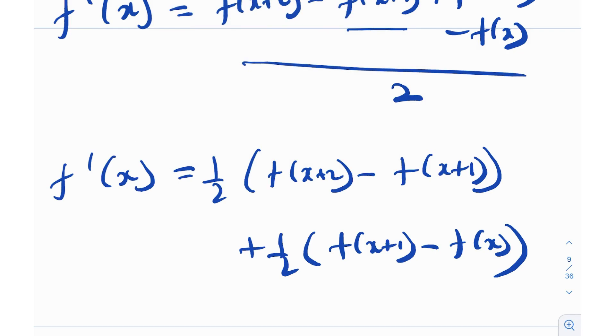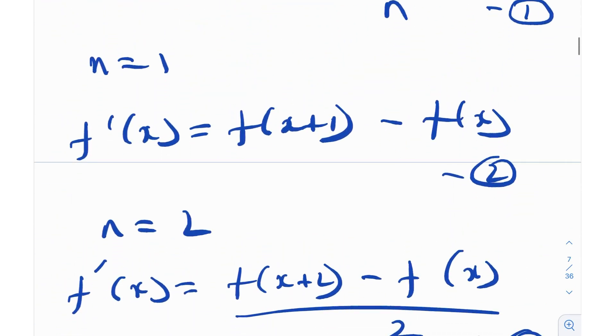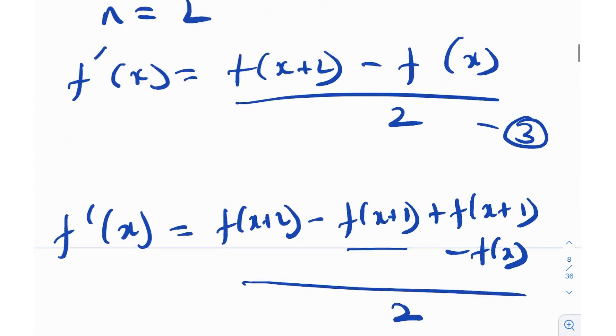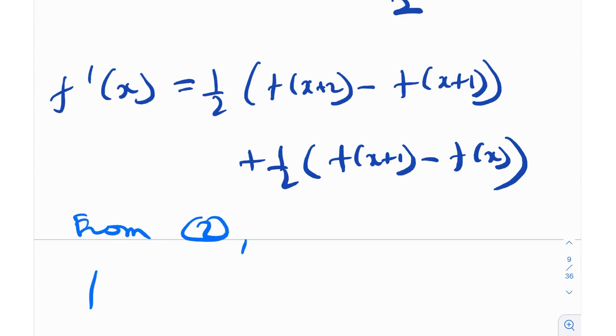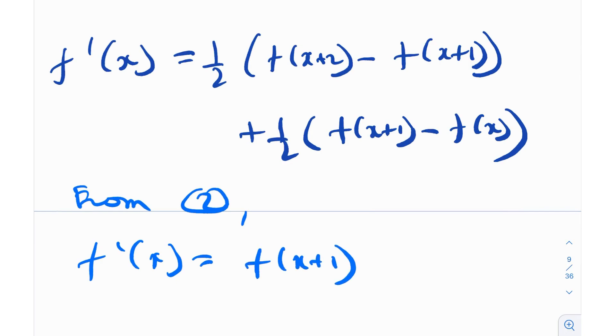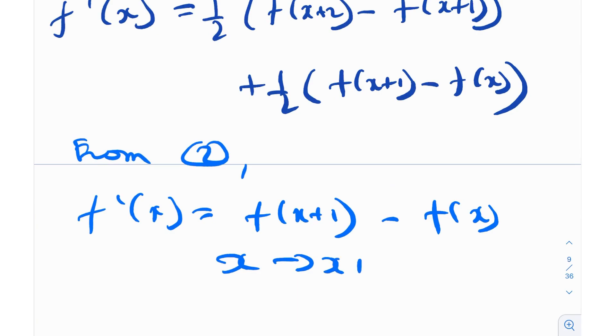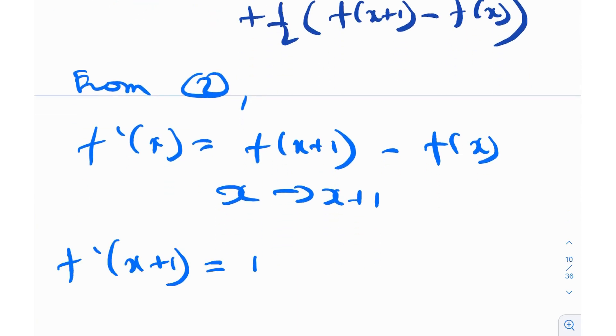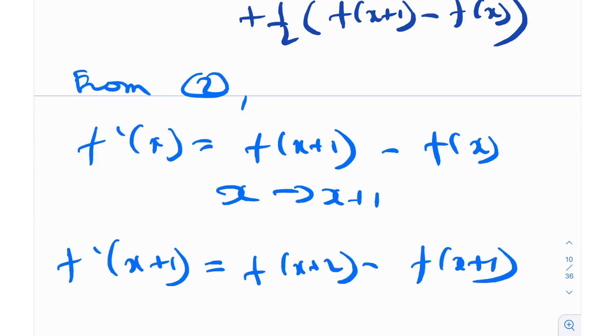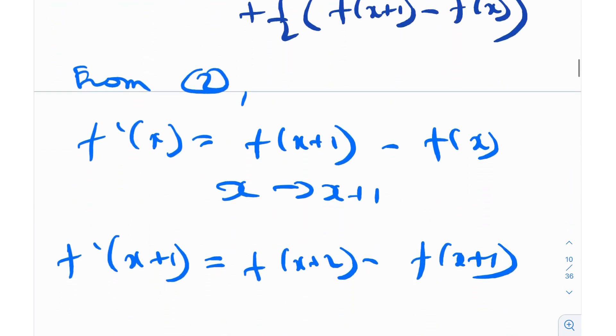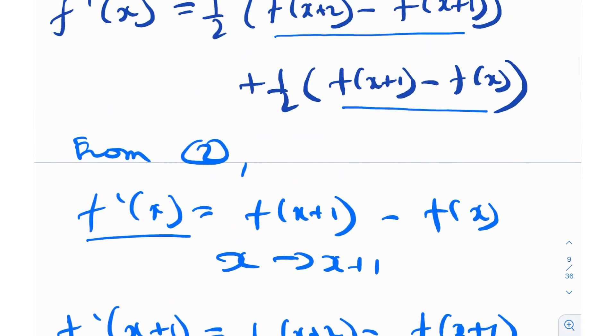Now we start to notice certain similarities. From equation number 2, we had f'(x) is equal to this. So from equation 2, we had f'(x) is basically f(x+1) minus f(x). So maybe if I replace x with x+1, I'll get another relation. So f'(x+1) is actually equal to f(x+2) minus f(x+1). Why did I do this? Because we have this term over here, f(x+2) minus f(x+1), and that's nothing but f'(x+1). Similarly, this is nothing but f'(x) from equation number 2. And this is what we will literally see over here. So basically what this entire thing reduces to, maybe let's just put this as number 4. So what does equation number 4 reduce to? It reduces to f'(x) is equal to half of f'(x+1) plus half of f'(x).